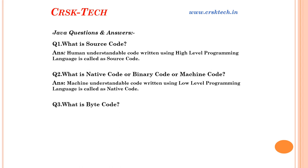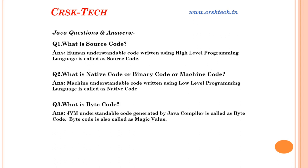Question number three: What is bytecode? A JVM understandable code generated by Java compiler is called bytecode. We cannot understand the bytecode, and even the machine cannot understand bytecode — only JVM can understand bytecode. If you want to see the bytecode, write a small Java program, then compile it using the Java compiler. The Java compiler will convert the source code into bytecode and store it in a .class file. Open the .class file and you can see the bytecode.